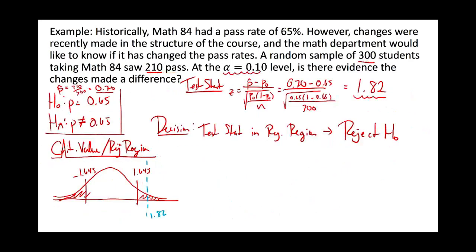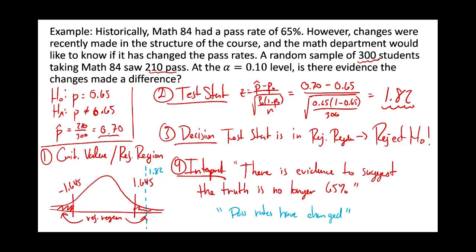We reject when things get too far away from what's claimed, because the tails are where you're not likely to see things. When our test statistic gets way out in the tails, that's telling us the null hypothesis is not very likely. So our decision is to reject — there is evidence for the alternative — meaning it looks like the pass rates have changed.